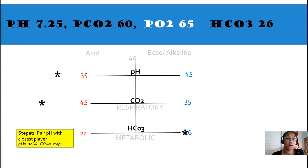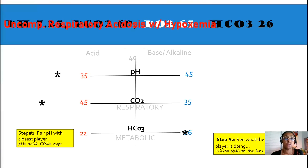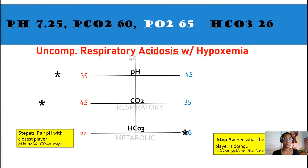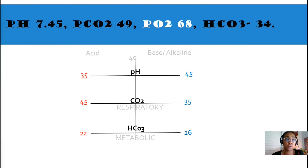The first step, pair our pH with the closest player. In this case, again, it's CO2. And then, step number two, see what the third player is doing. HCO3 is still on one line. No compensation is happening. Our interpretation is uncompensated respiratory acidosis with hypoxemia. The PaO2 of 65 shows that this patient is hypoxemic.